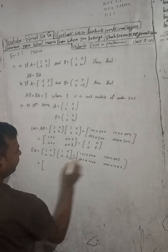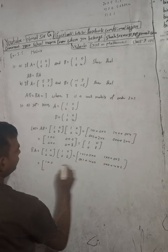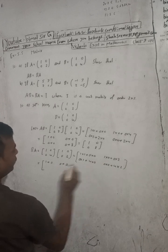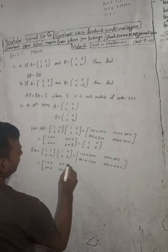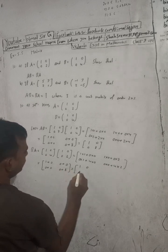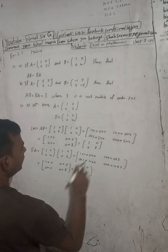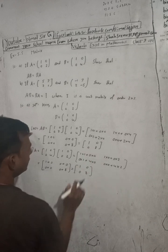So we get: 1 plus 0 is 1, then 0, then 0, then 0 plus 8 is 8. Result is [1, 0; 0, 8]. LHS we got [1, 0; 0, 8] and RHS is also [1, 0; 0, 8] — same result.